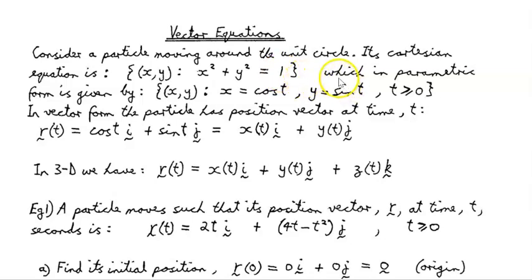Which now, if we parameterise it, so in parametric form it becomes the form is given by the set of ordered pairs (x, y) such that x = cos t and y = sin t for t ≥ 0. Because we've parameterised it in terms of the single variable t,